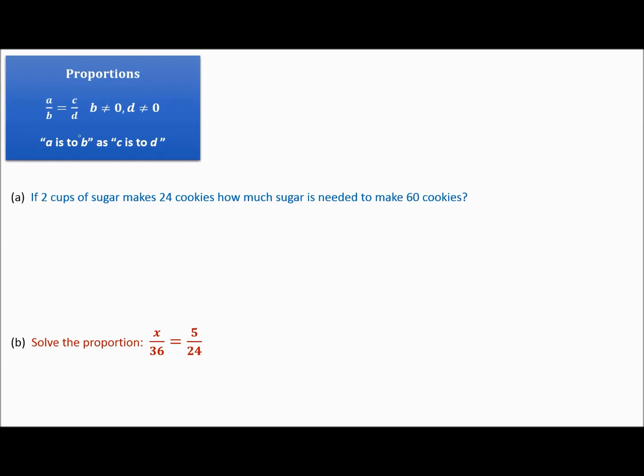So let's try our problem. If we have two cups of sugar that makes 24 cookies, so we can say these two things go together. How much sugar is needed to make 60 cookies? So these two things go together. Two is to 24, so two cups of sugar is to 24 cookies. Now when we solve this proportion, we do not have to have the units in the fraction. So we really could write this as 2 over 24 is equal to x over 60.